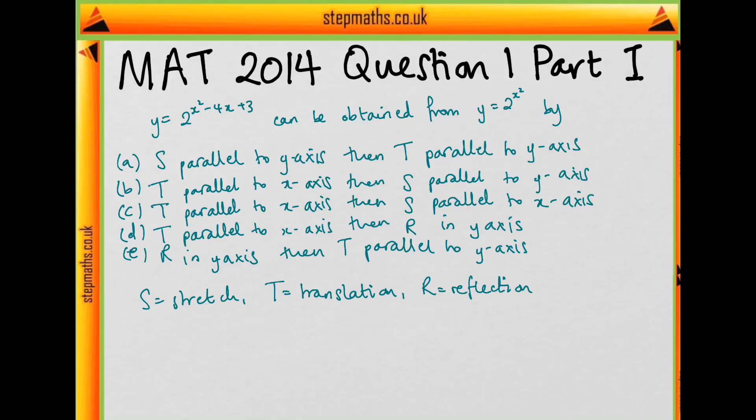Hello, in this video I'm going to go through part i on question 1 of the MAT 2014 paper. It asks how we can obtain the graph y equals 2 to the power of x squared minus 4x plus 3 from the graph y equals 2 to the power of x squared.